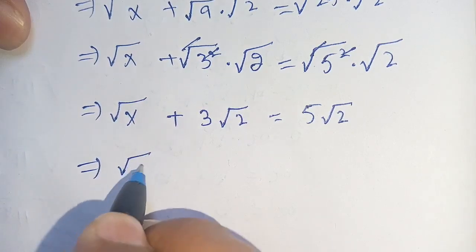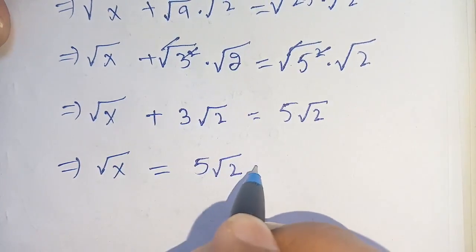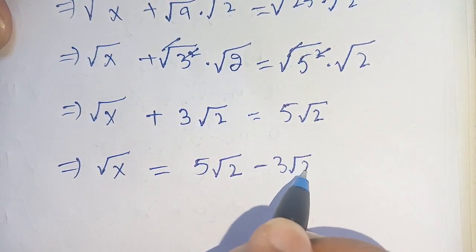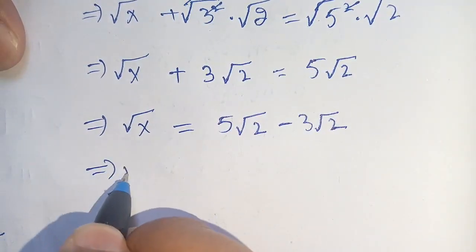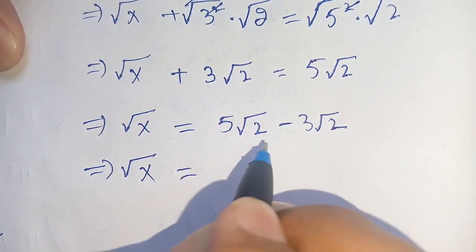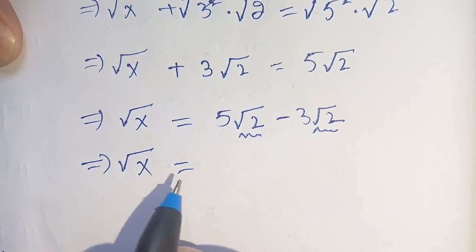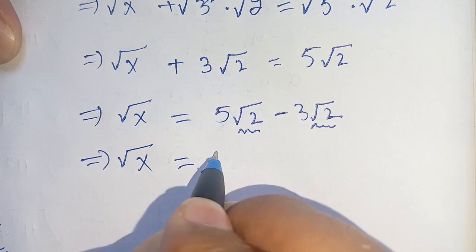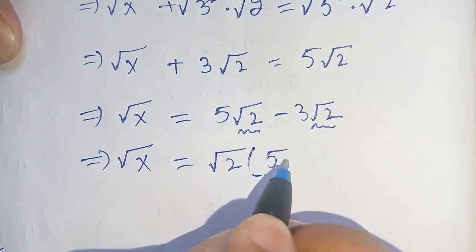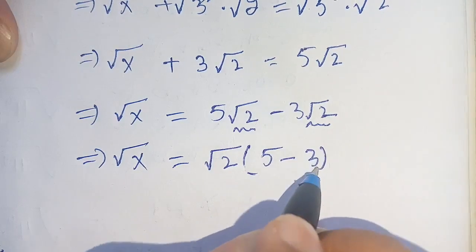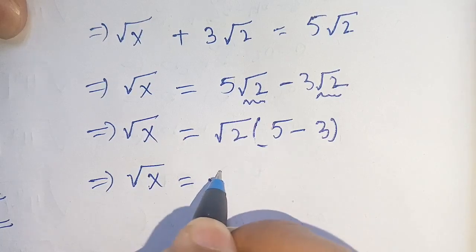In the next step, square root of x is equal to 5√2 minus 3√2. We factor out square root of 2 from both terms and get square root of 2 times (5 minus 3).